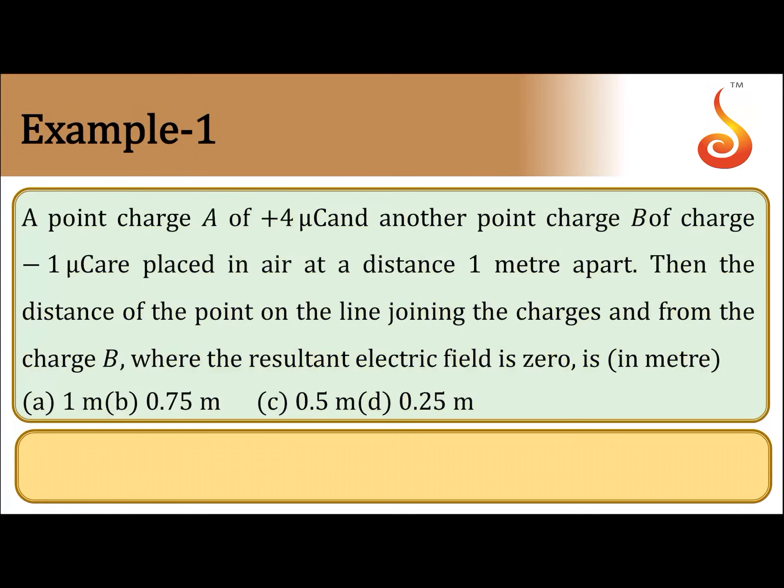To understand this, let us consider a problem. A point charge A of plus 4 microcoulomb and another point charge B of charge minus 1 microcoulomb are placed in air at a distance 1 meter apart. We need to find the distance of the point on the line joining the charges, measured from charge B, where the resultant electric field is zero.